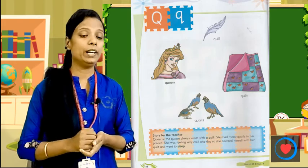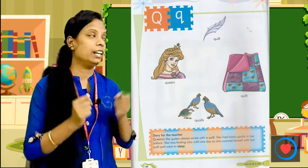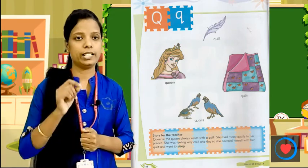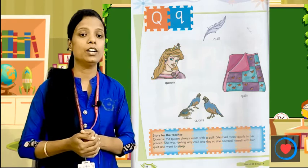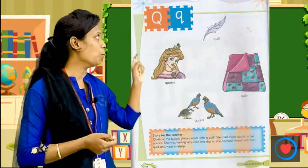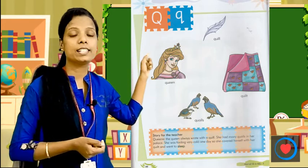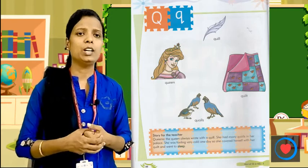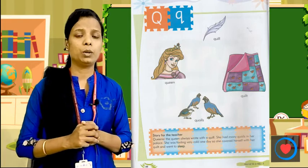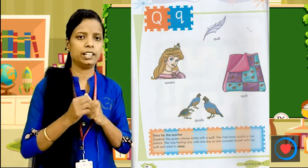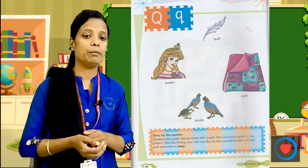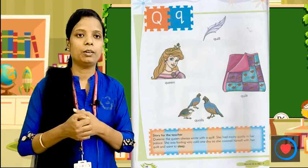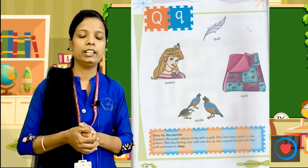Queenie को quilt से लिखना बहुत पसंद था, वो quilt से लिखती थी. और उसके palace में बहुत सारे quails birds रहते थे. एक दिन Queenie को ठंड लगने लगा, तो उसने अपने quilt से cover किया और उसको ठंडी कम हो गई.